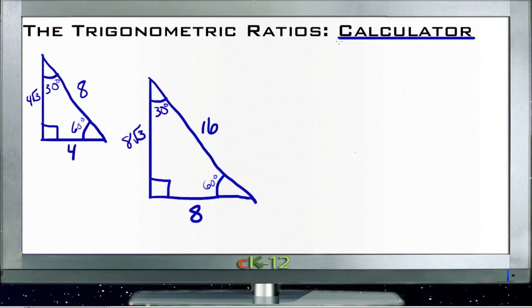This lesson talks about using the trigonometric ratios with a calculator. What I have here on the screen are two different triangles that are similar, meaning their angles are the same. They're both 30-60-90 triangles. The reason I have them both on here is to show you a property about the trigonometric ratios.